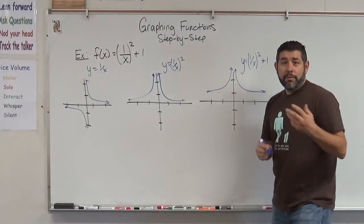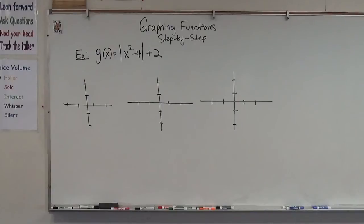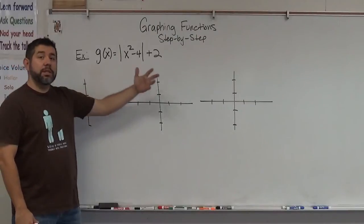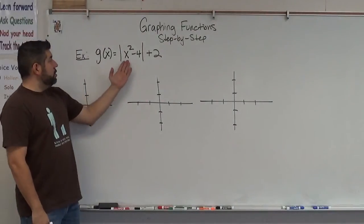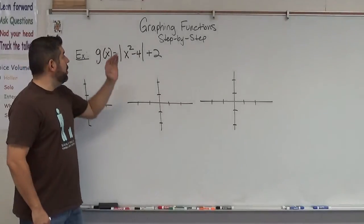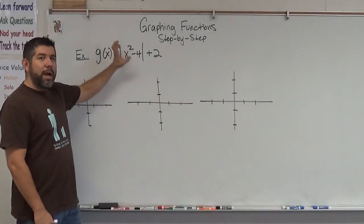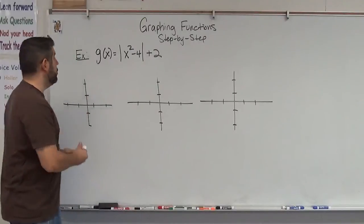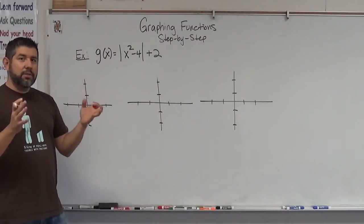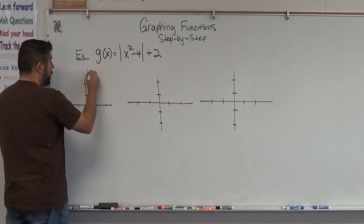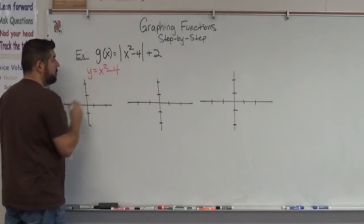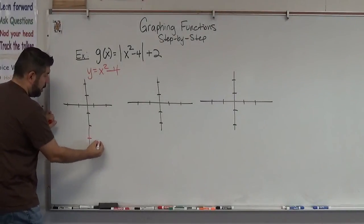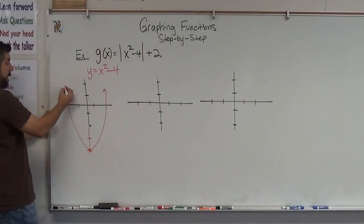Let's take a look at another example. We're looking at g of x equals the absolute value of x squared minus 4, plus 2. We start with the parent function x squared — a parabola starting at the origin. Taking minus 4 shifts it down 4 units, giving us x-intercepts at negative 2 and positive 2. So let's start with x squared minus 4, which starts here and goes through zeros at negative 2 and positive 2.